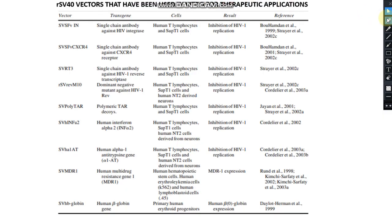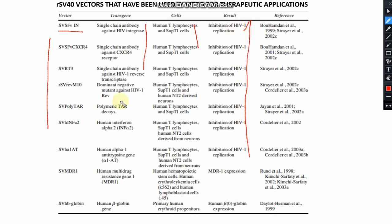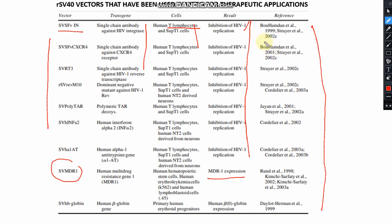Here you can see a slide showing different applications of SV40. Different kinds of vectors, the transgenes they carry, the cell lines used, and their purposes are listed. Applications include growing human T-lymphocytes for HIV research, MDR (multi-drug resistant) expression, and beta globin expression for thalassemia patients. References for further study are also provided.